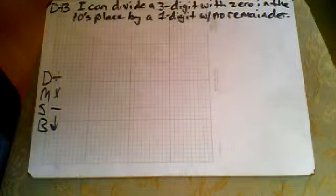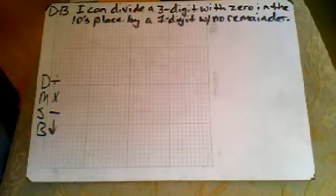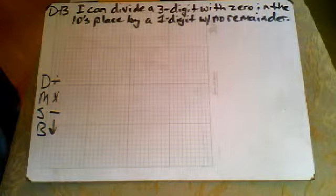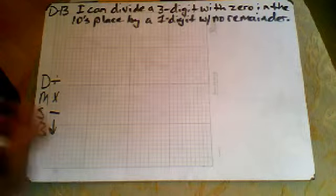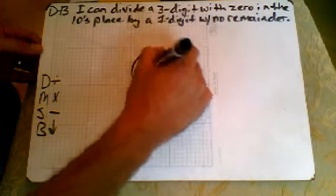Alright guys, here we are on D13. I can divide a three-digit number with a zero in the tens place by a one-digit number with no remainders. Let me write that first one down there so we make sure we understand what this is asking us.